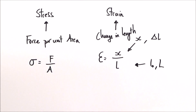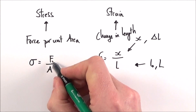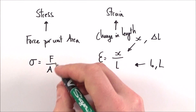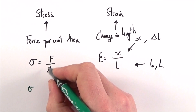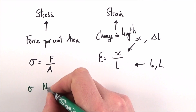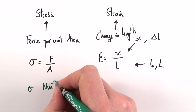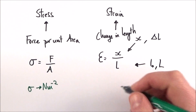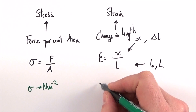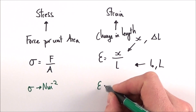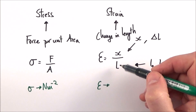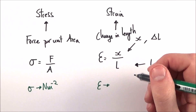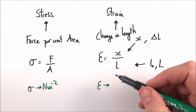In terms of units, if something is a force divided by area, then the units of stress are going to be given in newtons per square metre. And if we look at strain, well, because it's a metre divided by a metre, it has no units — it's a dimensionless quantity.